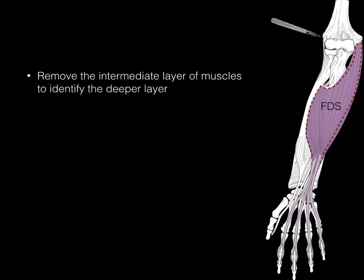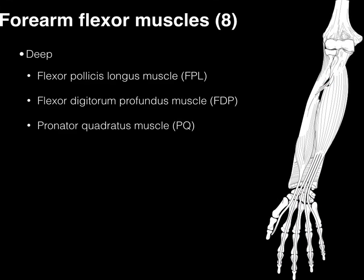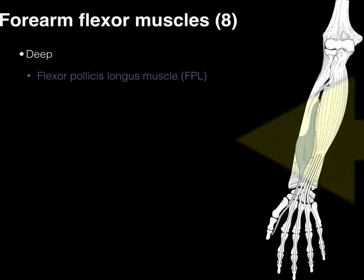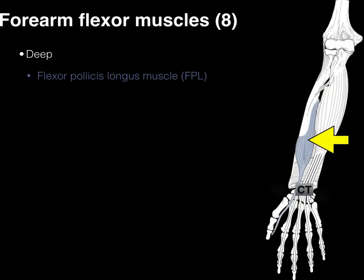Now removing the intermediate layer, we reach the three deep muscles. The first is the flexor pollicis longus — 'pollicis' means thumb. It arises from the radius, courses through the carpal tunnel, and inserts on the distal phalanx of the thumb, flexing the thumb.